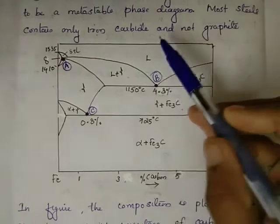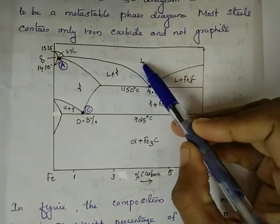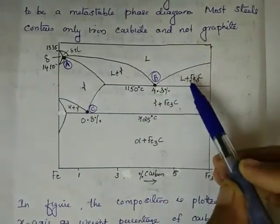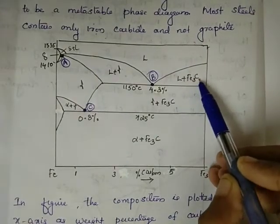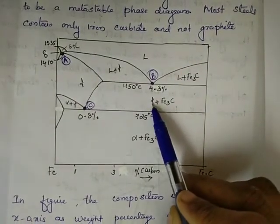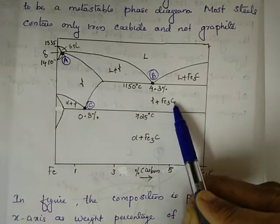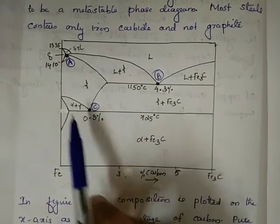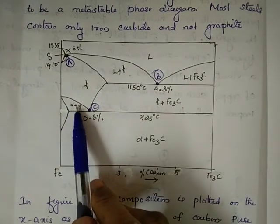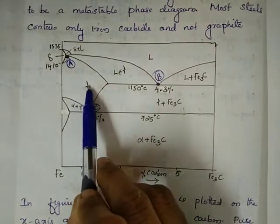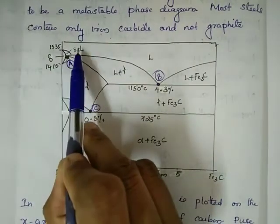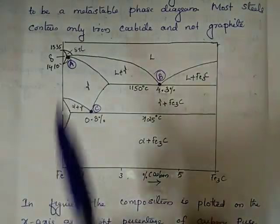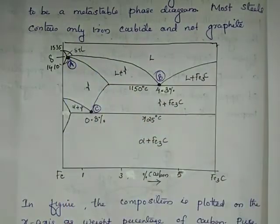The different regions in the Fe-Fe3C phase diagram include: first, the liquid region; then the liquid plus solid region; then the liquid plus Fe3C region; then the gamma plus Fe3C region; then the alpha plus Fe3C region; also the alpha plus gamma region; the gamma region; the delta region; and the delta plus liquid region.